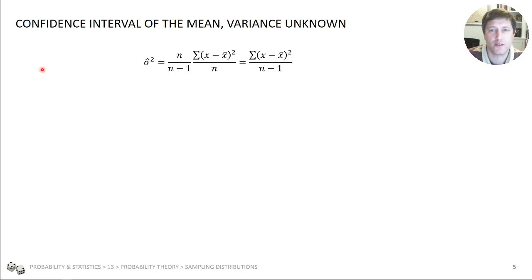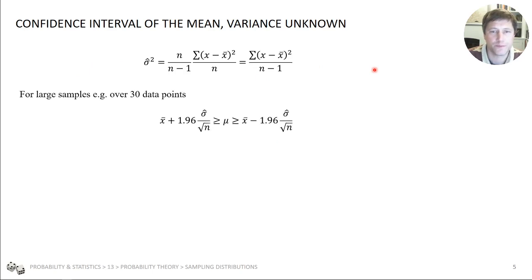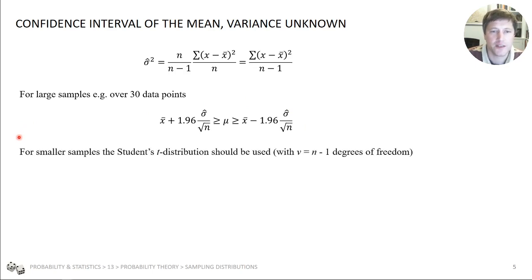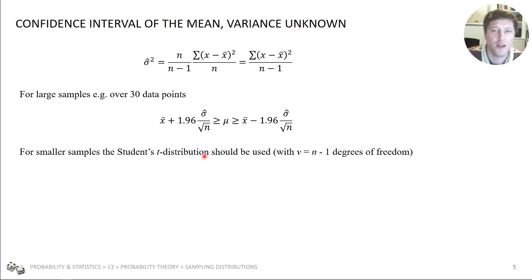We can use the non-biased standard deviation or variance of our sample as an estimator. If you have a large data set you can get away with using that as a reasonable estimate. But if your data set is smaller, this becomes quite inaccurate. So instead we use something called the Student's t-distribution instead of the normal distribution. Whereas we said it was normally distributed before, for smaller sample sizes where we don't know the population standard deviation, we need to use this different distribution.